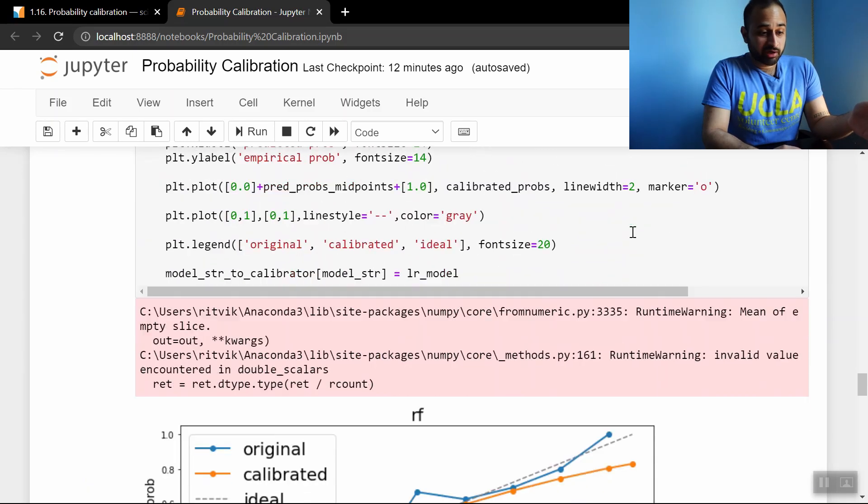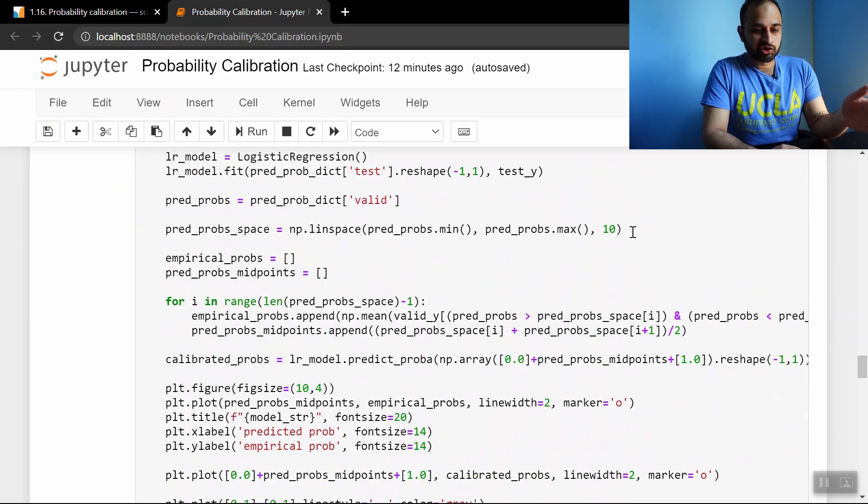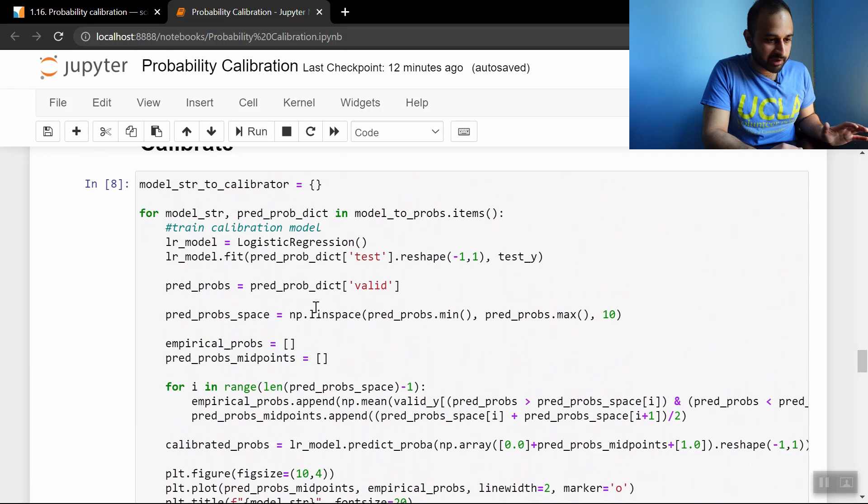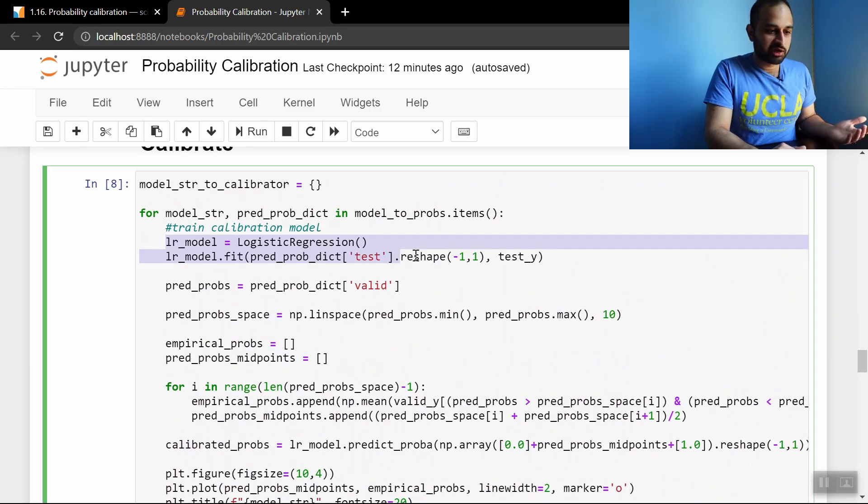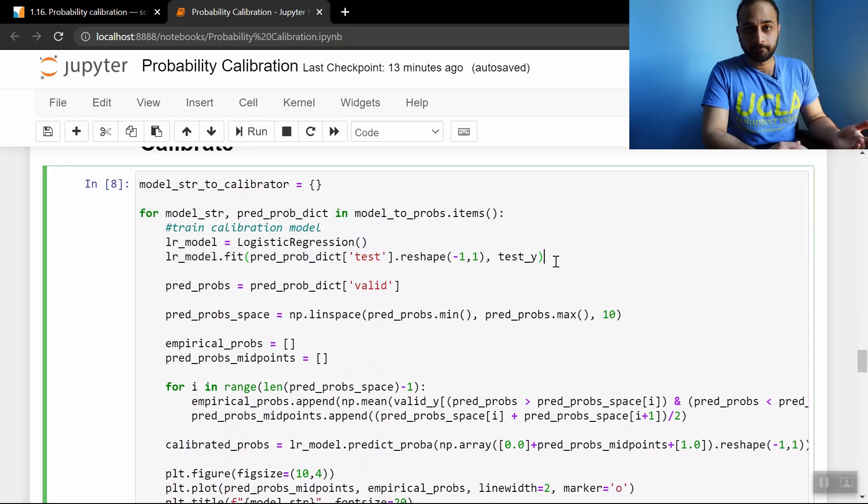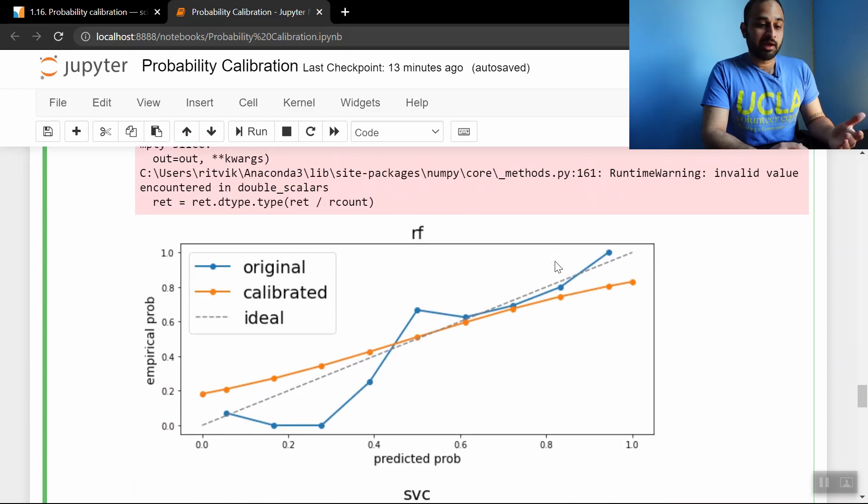So then we go ahead and calibrate these. So this code, although it looks large, is just basically doing exactly what we talked about before. We are just training a logistic regression. Let me see if I can find that exact line. That happens in the beginning. So we train a logistic regression right here, which is our calibration layer.